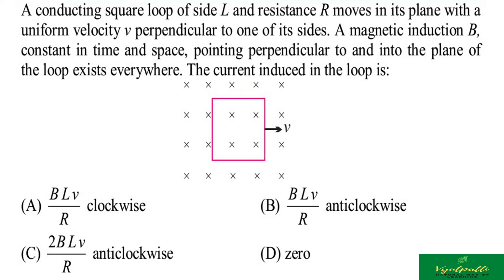तो जब change in flux ही नहीं हो रहा, हर जगह same है, तो current induced zero होगी। तो D option सही है। अब अगर कुछ लोगों के दिमाग में होगा कि सर ऐसे कैसे, अगर हमने पढ़ा था कि conductor अगर move करता है किसी magnetic field में तो